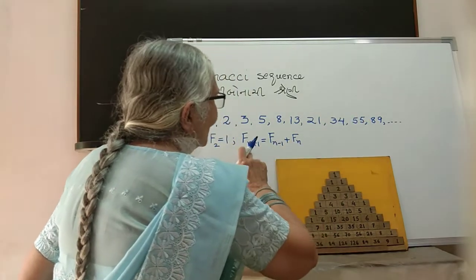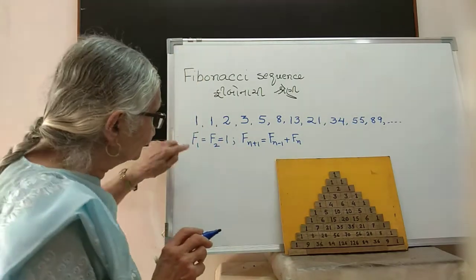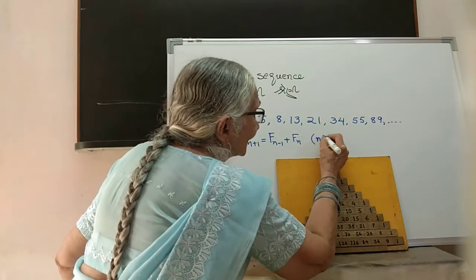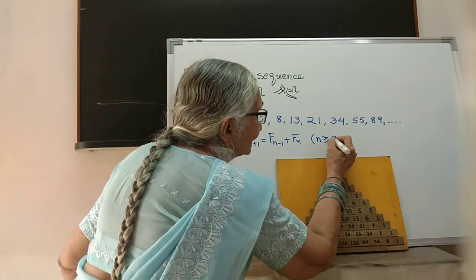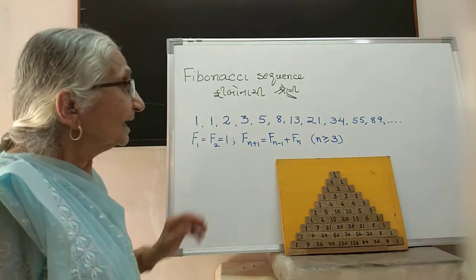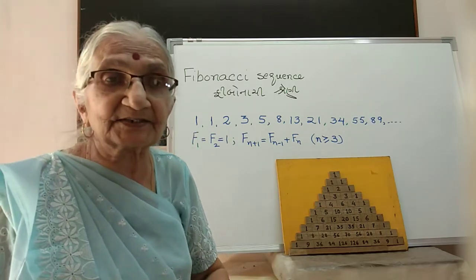Is this always true for all n? No, n equals 1 and 2 are given already, so this is true for n greater than or equal to 3.